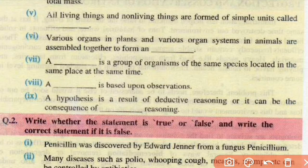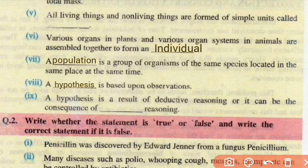No. 6: Various organs in plants and various organ systems in animals are assembled together to form an individual — organs or organ systems mil ke individual bana te hain. No. 7: A dash is a group of organisms of the same species located in the same place at the same time. Group of same species located in the same place ko population kahte hain. No. 8: A dash is based upon observation — a hypothesis is based upon observation.